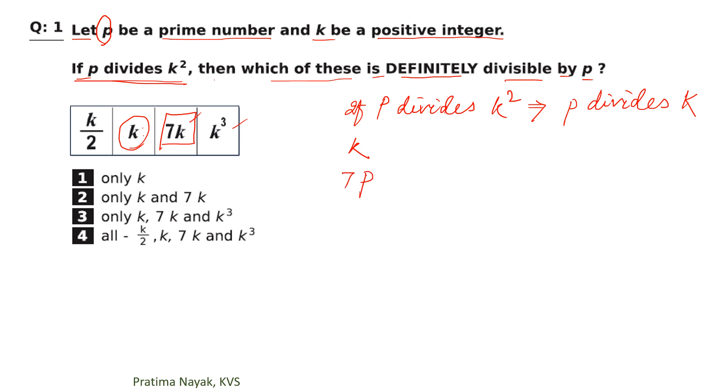But K is also divisible by P. Similarly, it is not 7P, it will be 7K, 7 times of K. If K is divisible by P, then 7 times of K is also divisible by P. Similarly, cube of K, which means K multiplies K multiplies K, is also divisible by P.